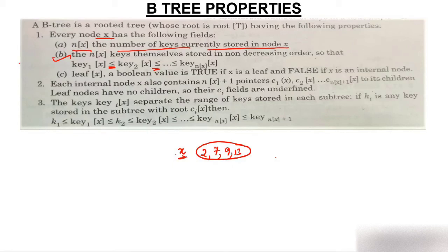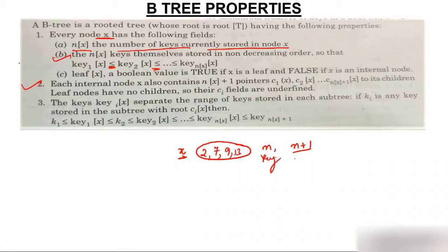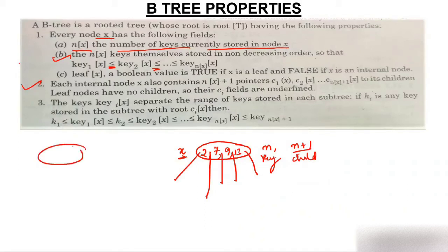The second property: each internal node x also contains n+1 child pointers. That is, if a node has n elements, it will have n+1 children. For example, with keys 2, 7, 9, 13, there is one pointer before 2, one between 2 and 7, one between 7 and 9, one between 9 and 13, and one after 13 — so 4 keys give 5 children.